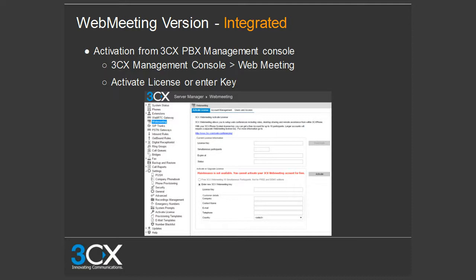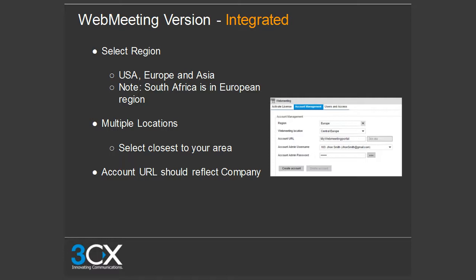After your key has been activated, go to the next tab — account management — where you establish your portal. Select your region and then your web meeting location. You always want to select the closest location to you, because this puts you in contact with the nearest MCU, giving you a better video experience with less latency.